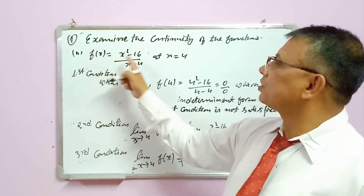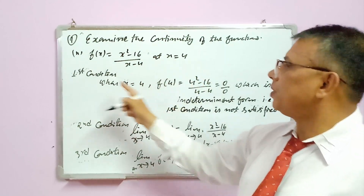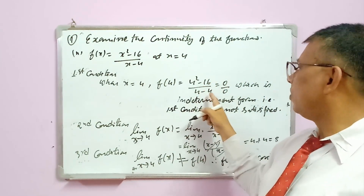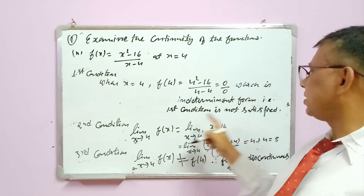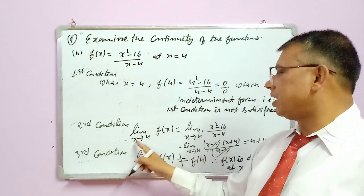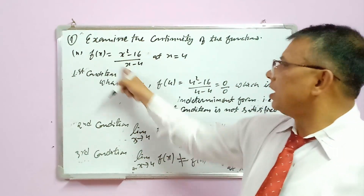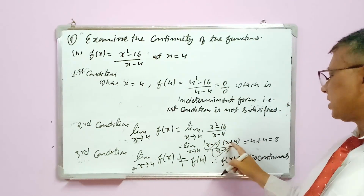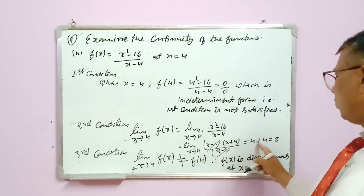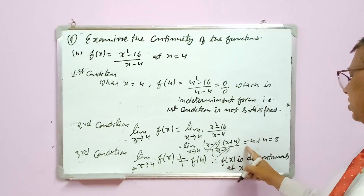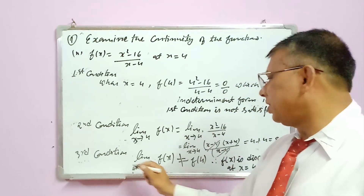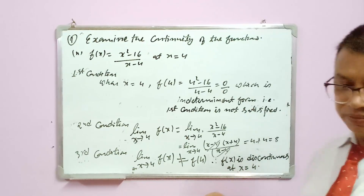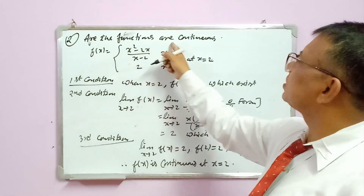Second question: f(x) = (x² - 16)/(x - 4) at x = 4. First condition: f(4) = (16 - 16)/(4 - 4) = 0/0, which is indeterminate — so the first condition is not satisfied. Second condition: limit as x tends to 4 of (x² - 16)/(x - 4) = (x - 4)(x + 4)/(x - 4) = x + 4. Substituting x = 4 gives 8. Since the first condition is not satisfied and the limit (8) ≠ f(4), hence f(x) is discontinuous at x = 4.